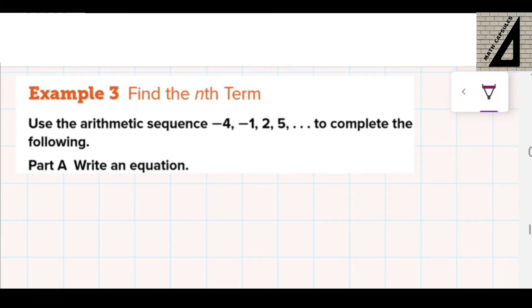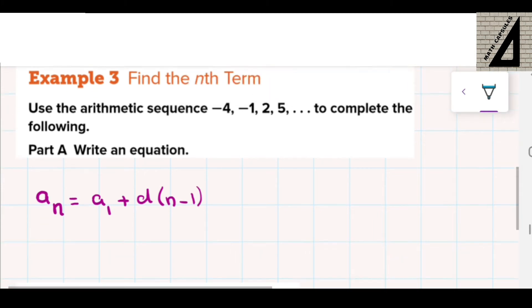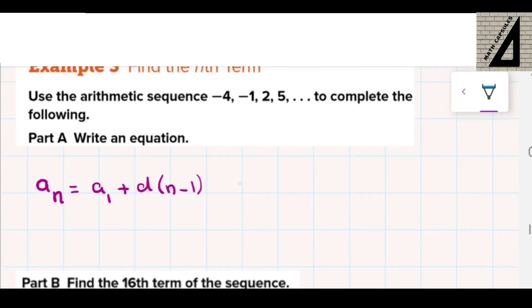To write this equation, we need to find out a sub n equals a sub 1 plus d times n minus 1. So first thing to get is to find a sub 1. We know that a sub 1 is the first term, and this is the first term in the sequence, which is negative 4.